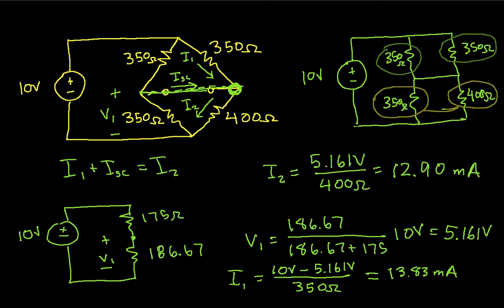So from this, we can compute the short circuit current. ISC is going to be I2 minus I1, which gives me then 12.9 milliamps minus 13.83 milliamps, which when I work this guy out, is minus 0.93 milliamps. So that gives us the short circuit current.